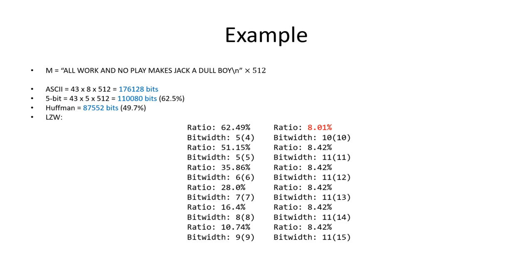Maybe the only string that would be compressed even better by LZW is a string of a single repeated character — like a billion A's. That would be the most compressible string, because every time you encounter a string of A's you can encode the next one, which will be one bit longer, and keep reusing the last code word you just created.